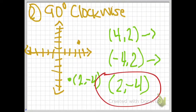For 90 degrees clockwise, you would have (4, 2) as your point. Then you would change it to (negative 4, 2) and flip those two coordinates around, and you would get (2, negative 4). Then you would graph the new point.